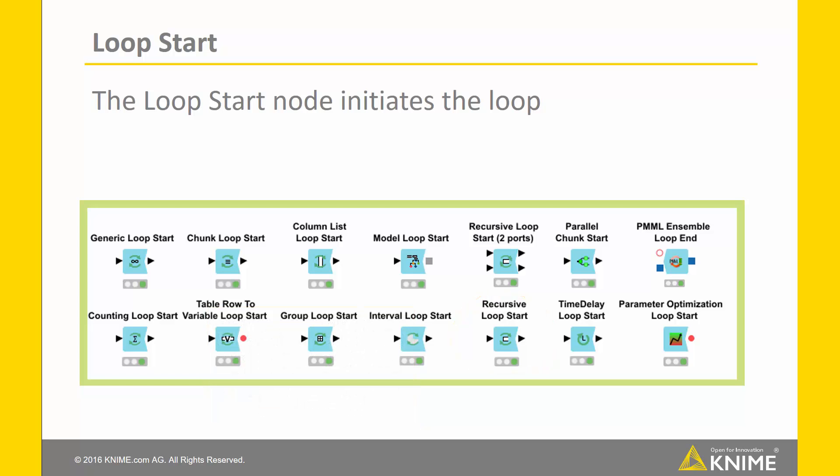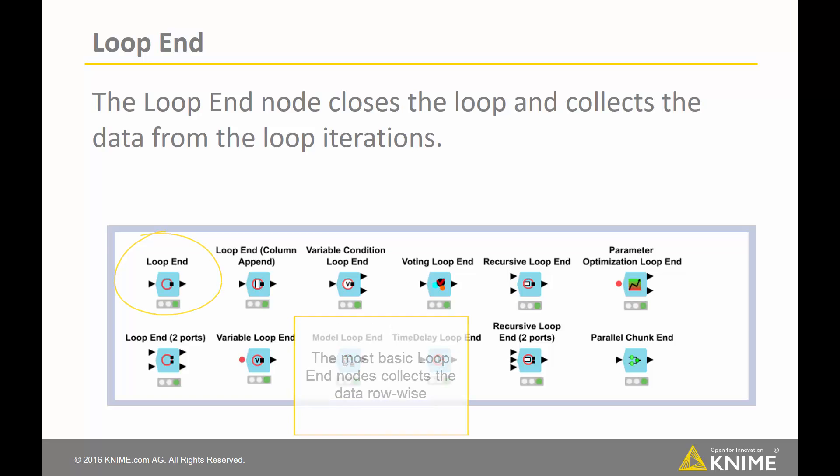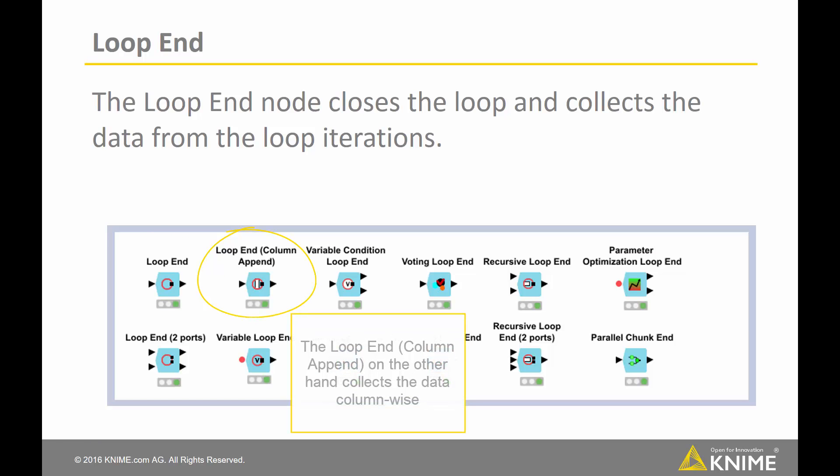Similar to the list of loop starts, we also have a set of different loop end nodes. The most basic loop end nodes collect the data row-wise. The loop end column append, on the other hand, collects the data column-wise.